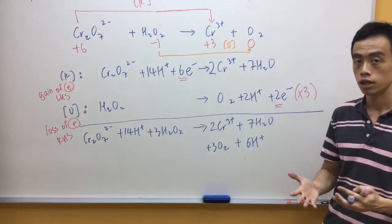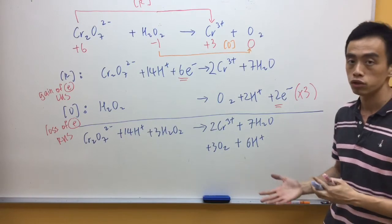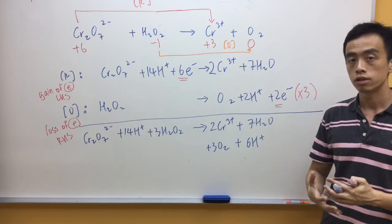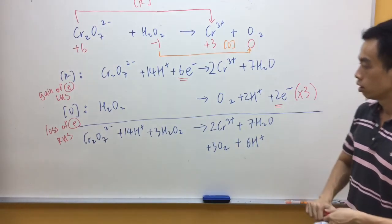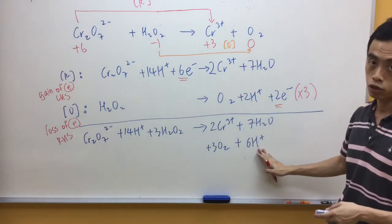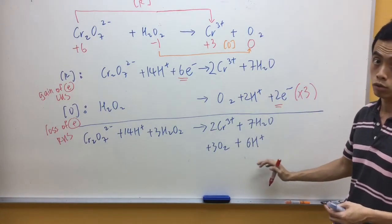Now, lastly, what we need to do is we need to check both sides of the equation to see whether there are any common species that we can cancel off. So, you notice in this case, left-hand side, I have 14 H+. Right-hand side, I have 6 H+. So, I can simplify this overall equation.